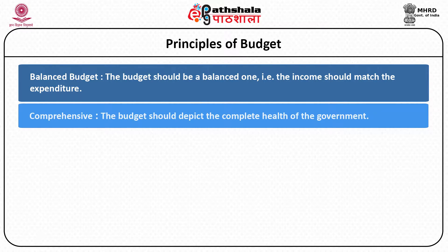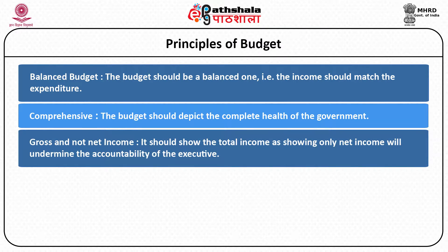The second principle is that the budget should be as comprehensive as possible, that is, it should depict the complete health of the government. In other words, it should show in detail the complete performance of the departments and various ministries so that everyone knows the correct position and does not grudge in paying taxes. Further, budget should be based on gross income, that is total income and not the net income, as the net income will undermine the accountability of the executor.